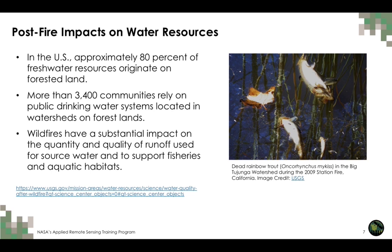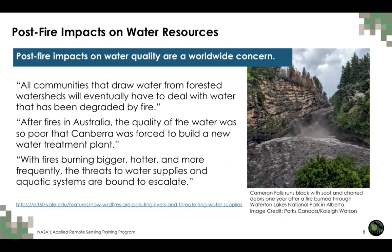In the U.S., approximately 80% of freshwater resources originate on forested land, and more than 3,400 communities rely on public drinking water systems located in watersheds on forest lands, putting them at risk from wildfires. Wildfires substantially impact the quantity and quality of runoff used for source water and also impact fisheries and aquatic habitats. This picture shows an example from the 2009 Station Fire in California, where many rainbow trout died as a result of post-fire water quality changes.